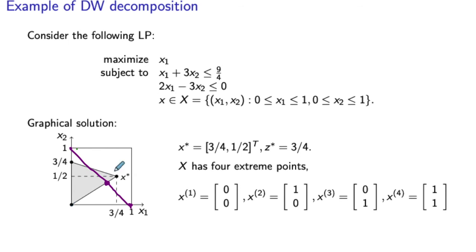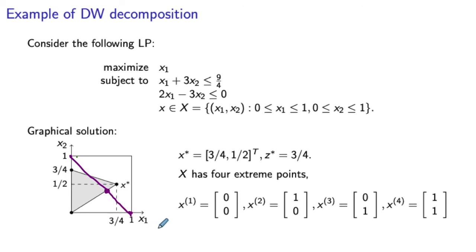There are alternative optima for the master problem, since x* could also be expressed as a convex combination of x¹, x², and x⁴. Finally, across four iterations of Dantzig-Wolfe decomposition, we ended up generating essentially all the extreme points of X. Clearly this was not an efficient approach for this particular small problem, but the example illustrates the mechanics of the method.